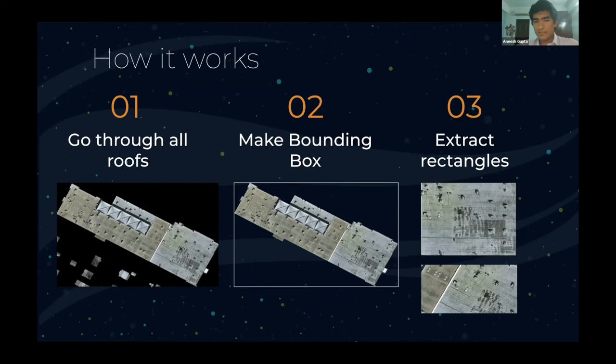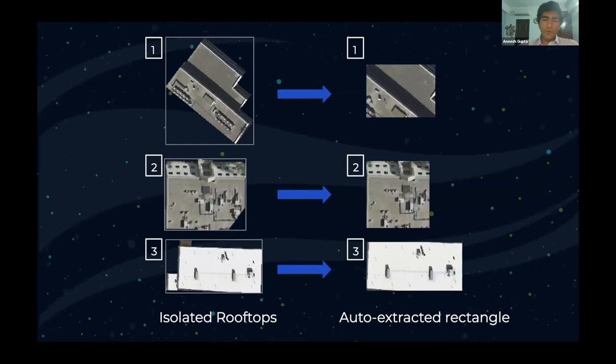These are some examples of rooftops we isolated and rectangular patches we extracted from them. Many rooftops are complex geometries — not perfect rectangles, but really complex polygons in some cases. Our tool auto-extracts rectangular patches from these buildings. Now I'll hand over to Scott to explain how the synthetic texture generation works.